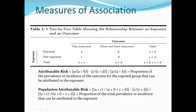We also have the population attributable risk. Here we use the whole population: (A+C) is the total patients who have the outcome, divided by total population, minus C/(C+D), all divided by (A+C)/total population. This gives the proportion of total prevalence or incidence that can be attributable to the exposure.